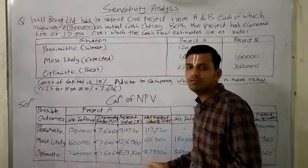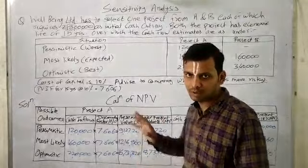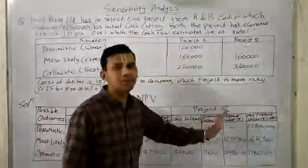What we have seen is we have positive net present value for all three situations in Project A. Now we will take Project B into consideration.